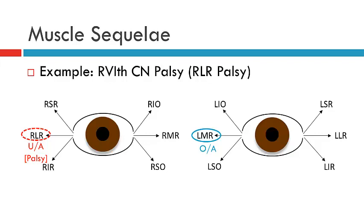This is the first element of the muscle sequelae. The next is that we will see an overaction or contracture of the right medial rectus. Contracture is the inability of a contracted muscle to relax. In this instance, this occurs due to Sherrington's Law — we see contracture of the muscle as the right medial rectus is unopposed by the lateral rectus, which is now underacting.